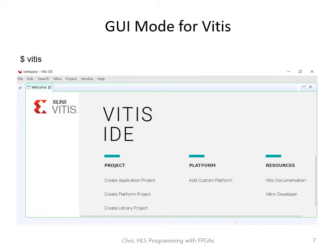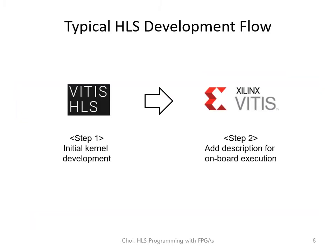You can choose whichever mode is more convenient for you. Now let's think about which flow to use in FPGA HLS design development. When you're first making a design, it's easier to go with the Vitis HLS flow because you can make and test the kernel only, and even do unit tests of sub-modules. When you're certain that your kernel is working correctly, then you can use the Vitis flow and incrementally add description for onboard execution. For the rest of this lecture, I'll explain how to port a Vitis HLS project to a Vitis project.